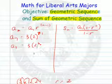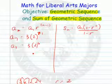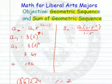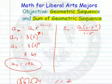2 to the 6th is equal to 64. So 3 times 64 would be equal to 192. And that would be what the 7th term was in our sequence.